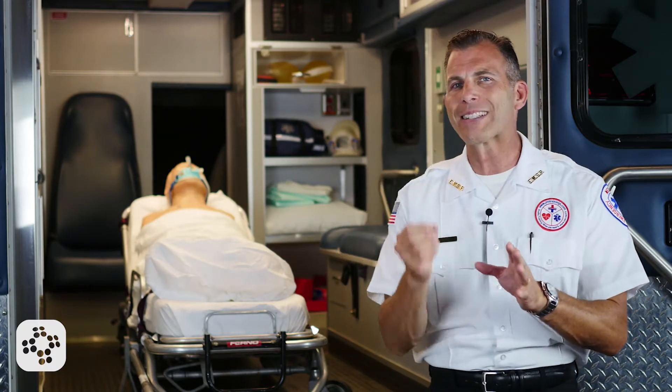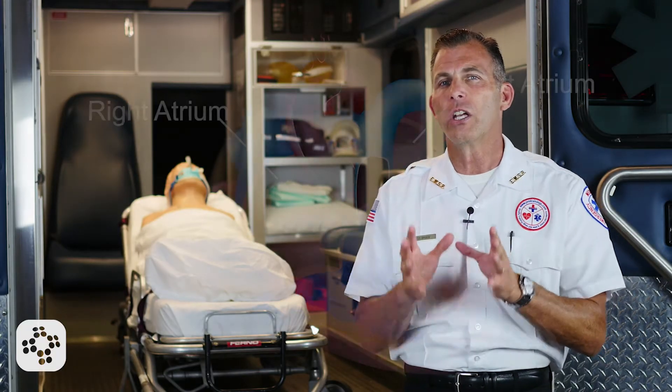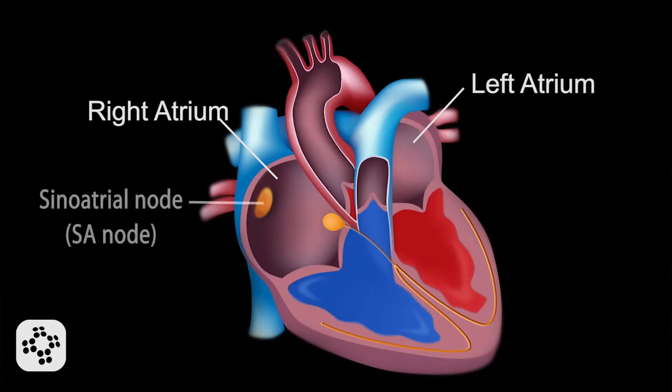The myocardium is a muscle unlike any other within the human body. It's unique in that it can generate its own electrical impulse, a property known as automaticity. A special part of the heart located in the superior aspect of the right atrium, called the sinoatrial node, or SA node for short, works like an internal dynamic pacemaker.